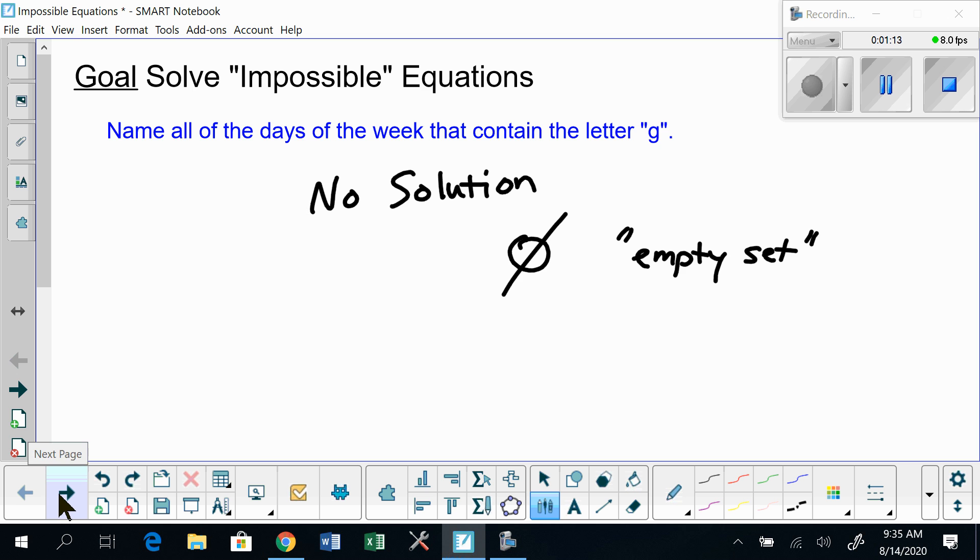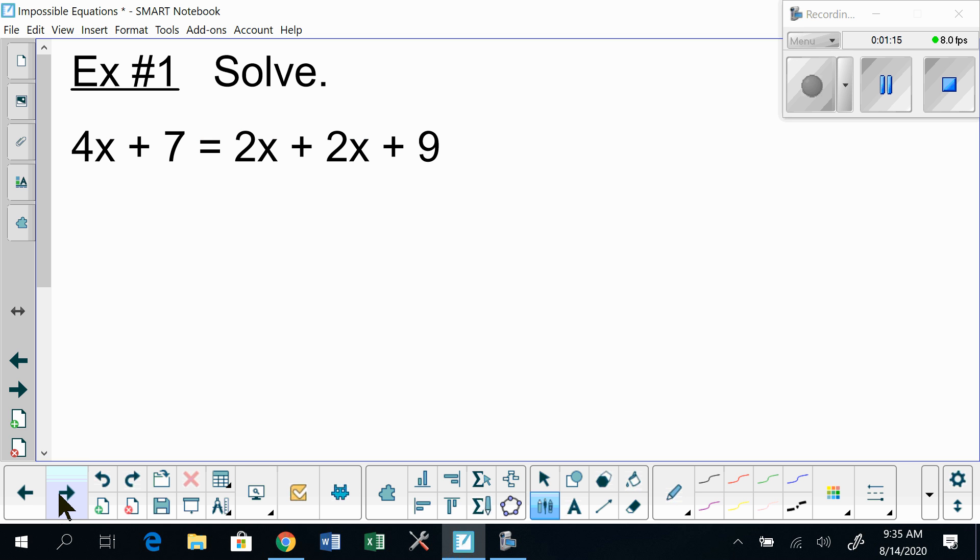So here is an example right off the bat. This equation looks innocent enough. It's an equation I'm sure you know how to tackle. Let's go ahead and jump into this and solve this equation. I do have two linear terms on the right-hand side of the equal sign—this 2x plus 2x adds up to 4x—but there's nothing to combine on the left-hand side of the equal sign, where 4x plus 7 is going to remain the same.